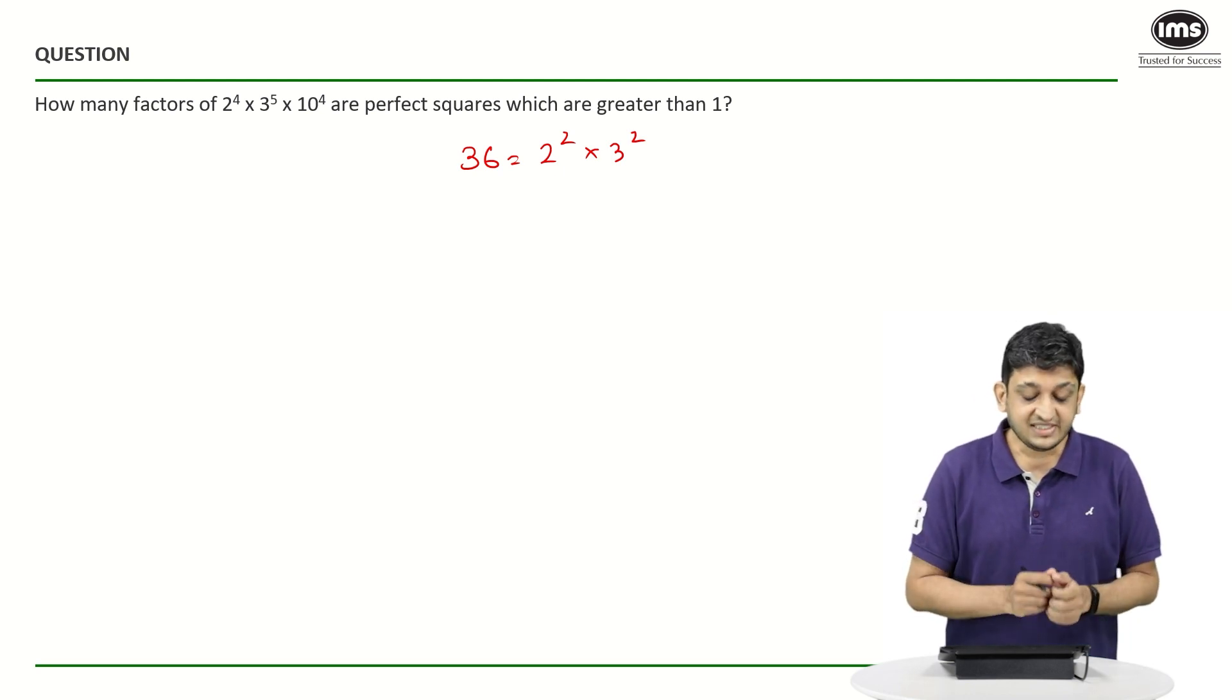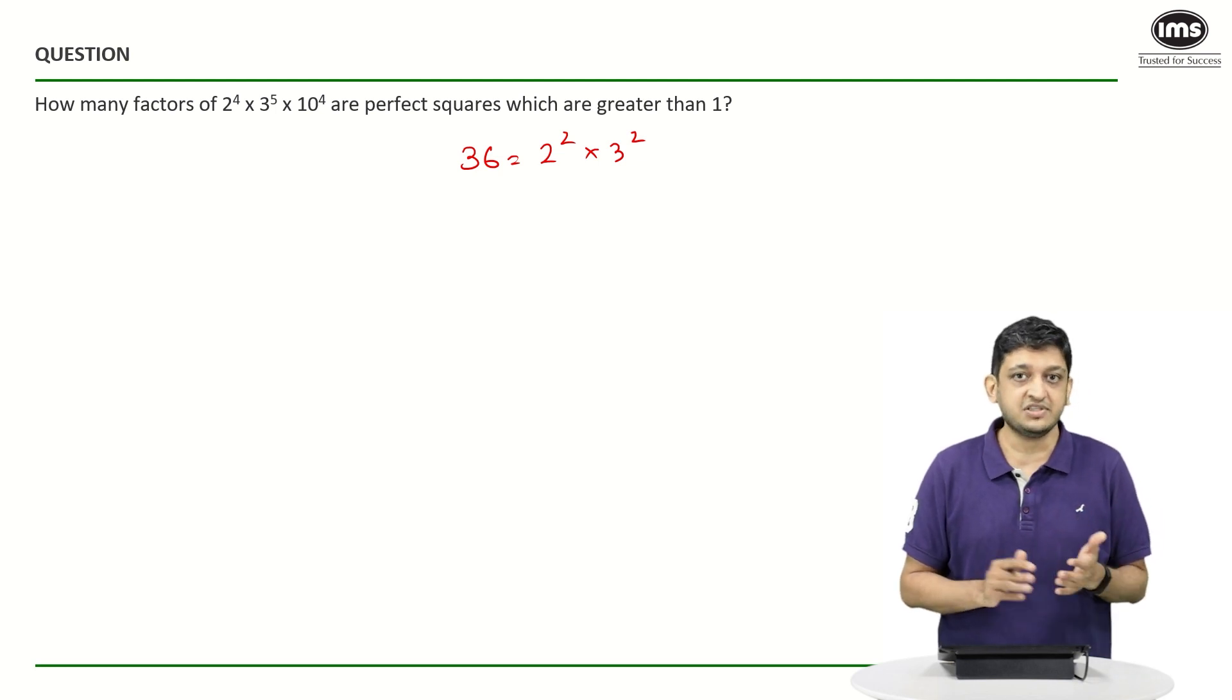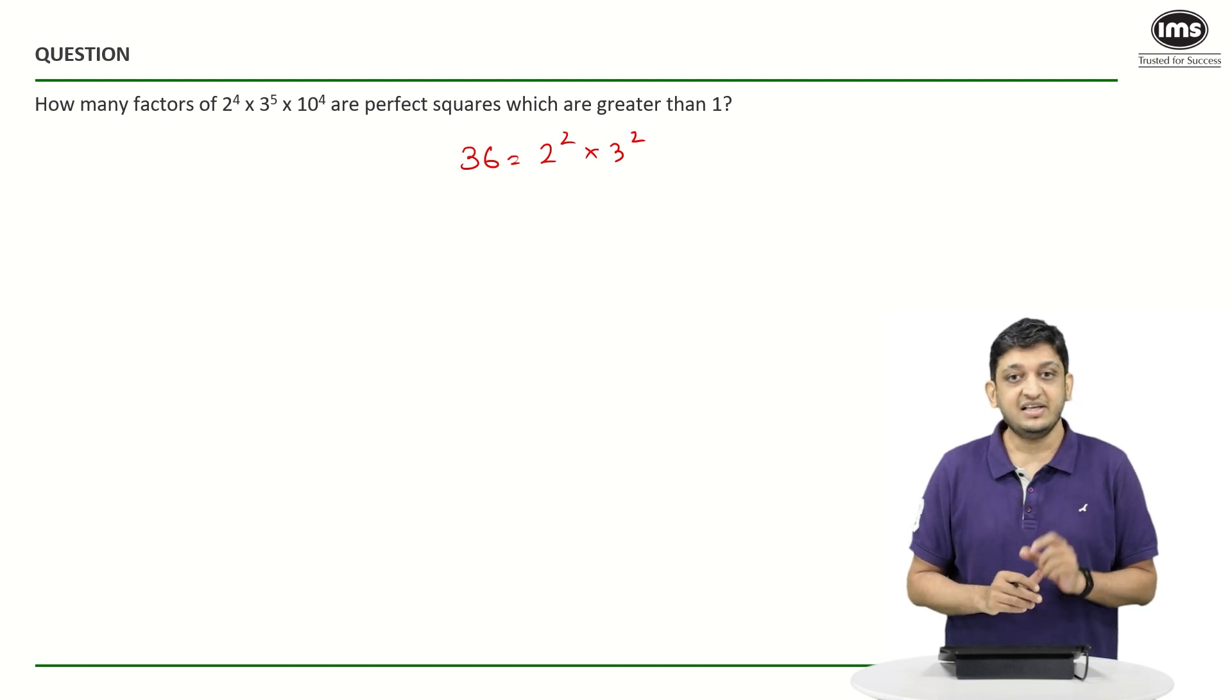So let's have a look at how can we represent this number, and there basically lies the first trap. If you look at the number that we have here, 2⁴ is fine, 3⁵ is also fine, but if you look at 10⁴ that we have here, this 10 is not exactly a prime number.